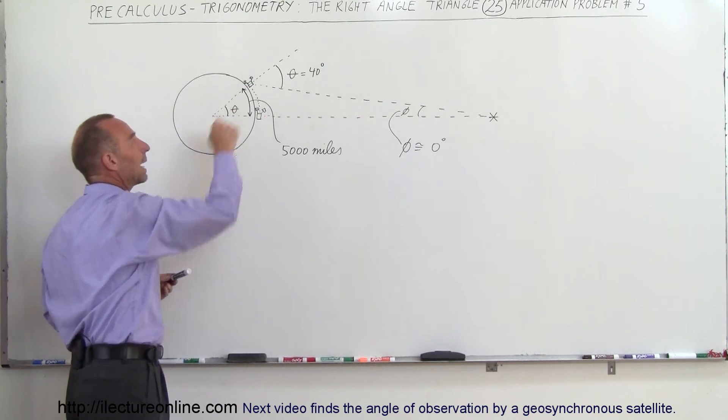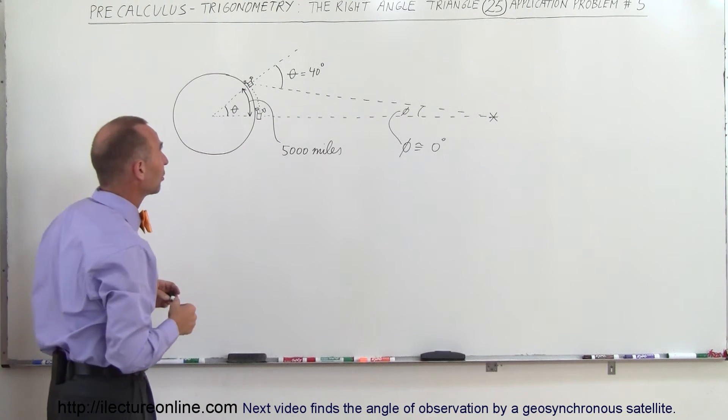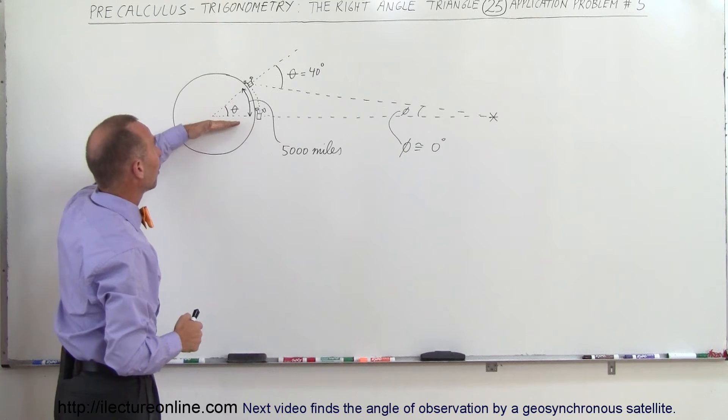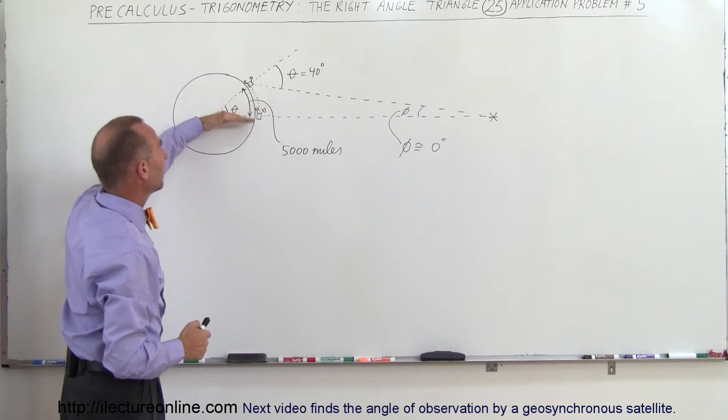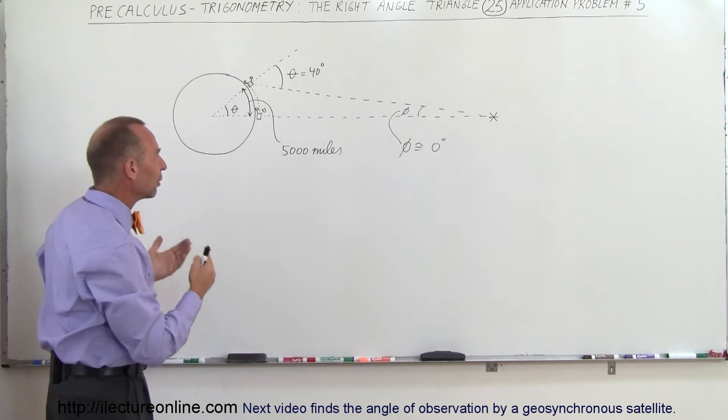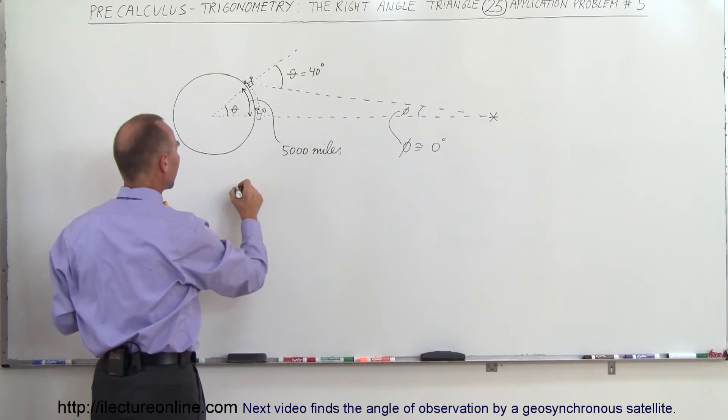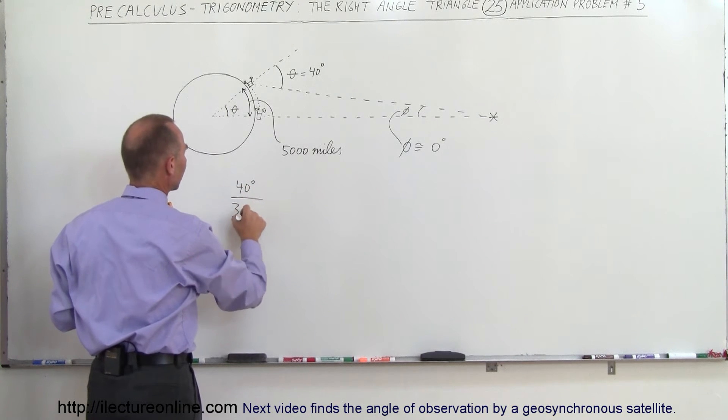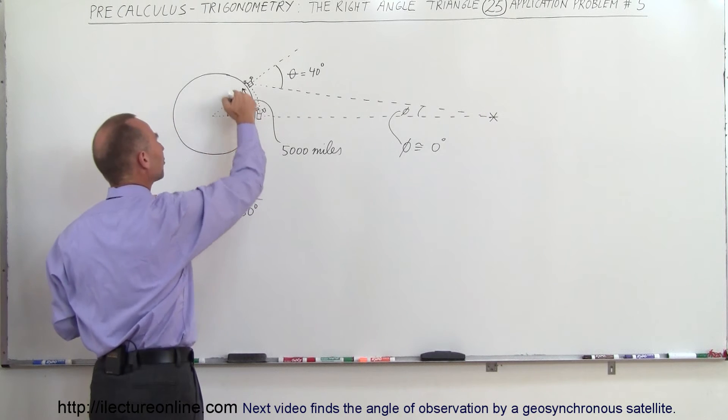And from that we should be able to figure out the circumference of the entire planet. Notice that if we go all the way around the planet, we'll go through an angle of 360 degrees. We've traveled through an angular distance, so to speak, of 40 degrees, so we can find a good ratio here.